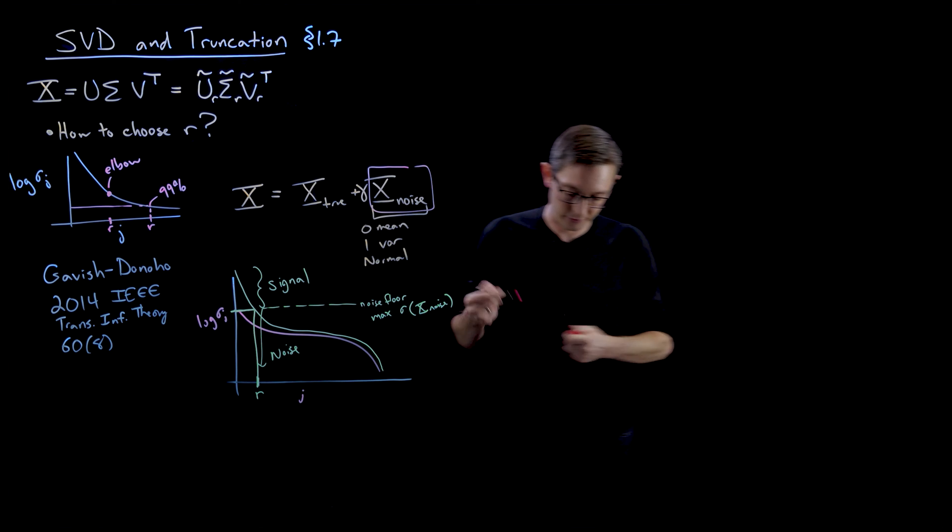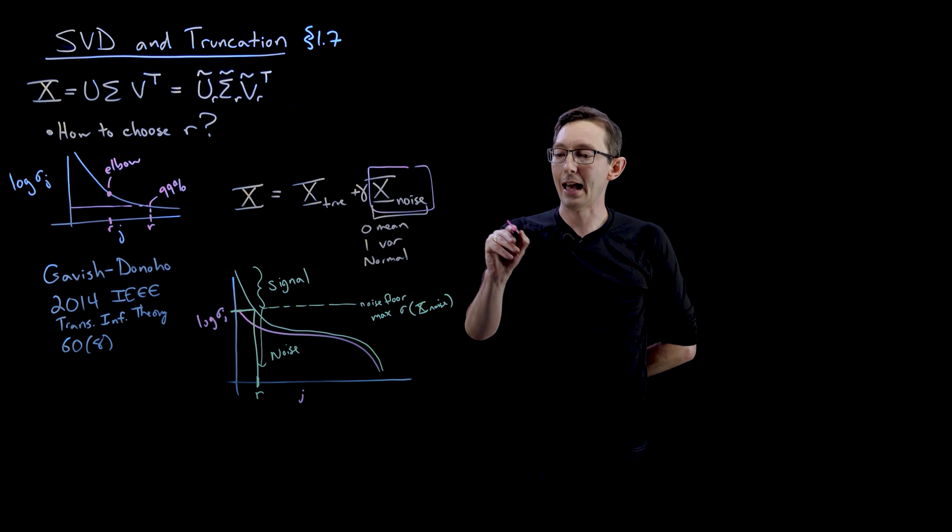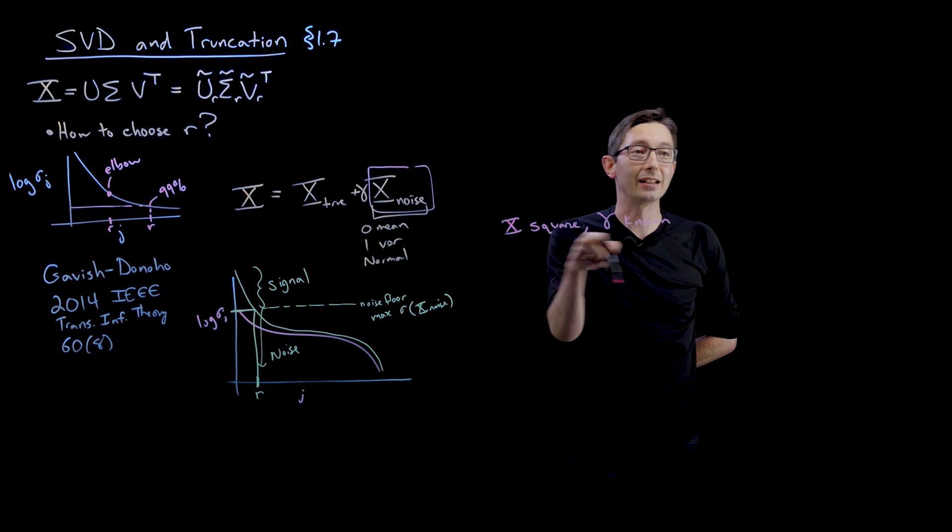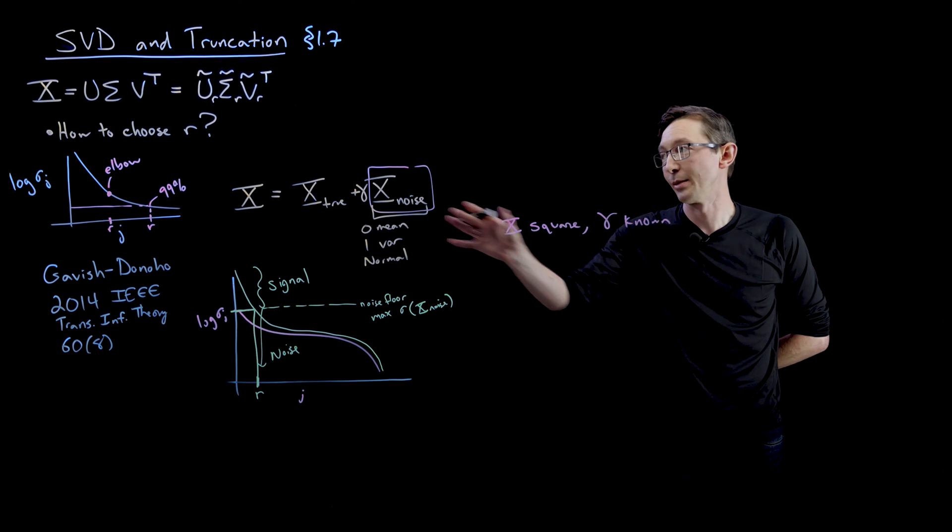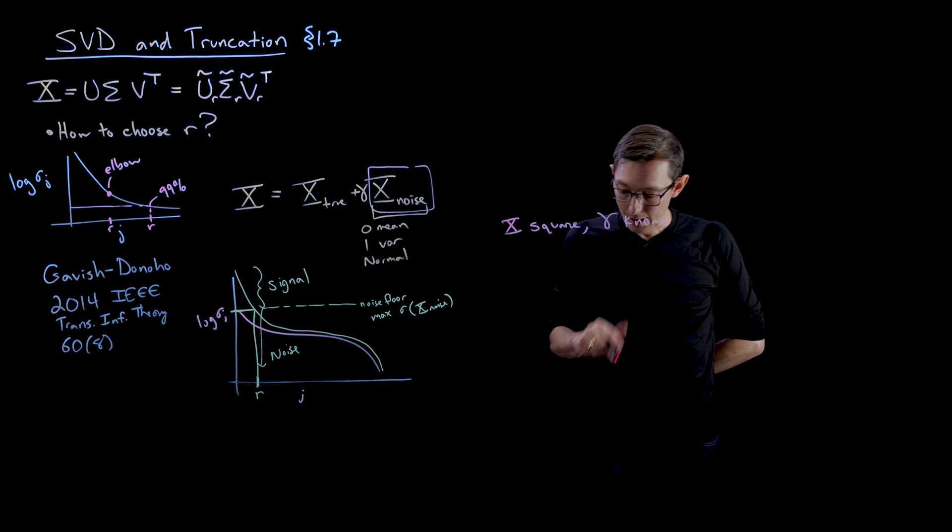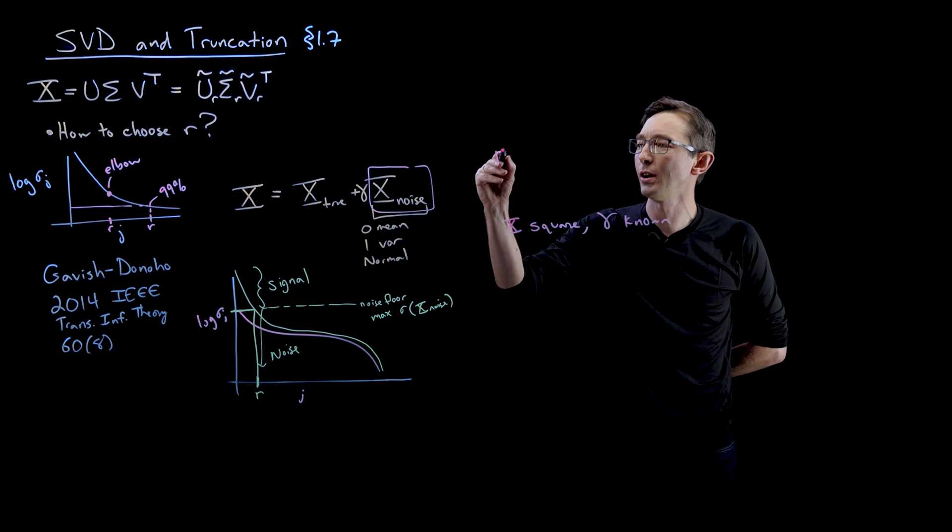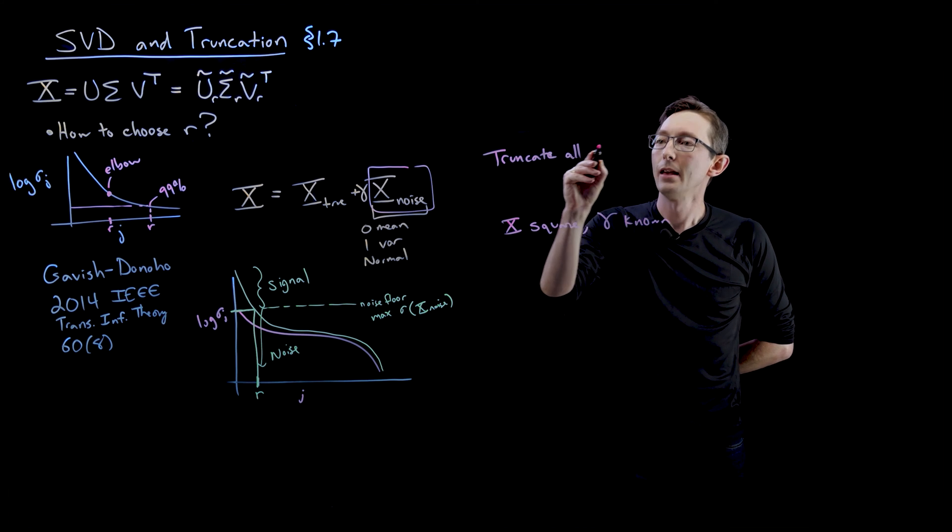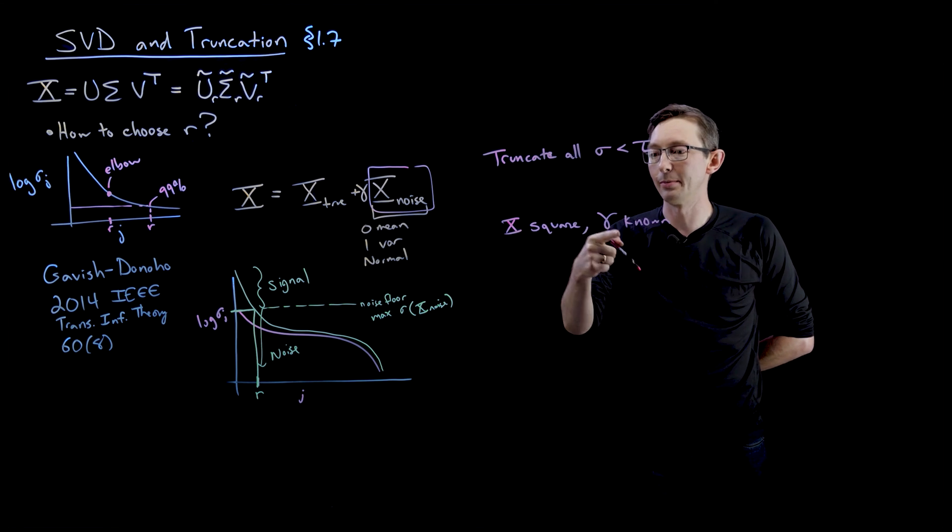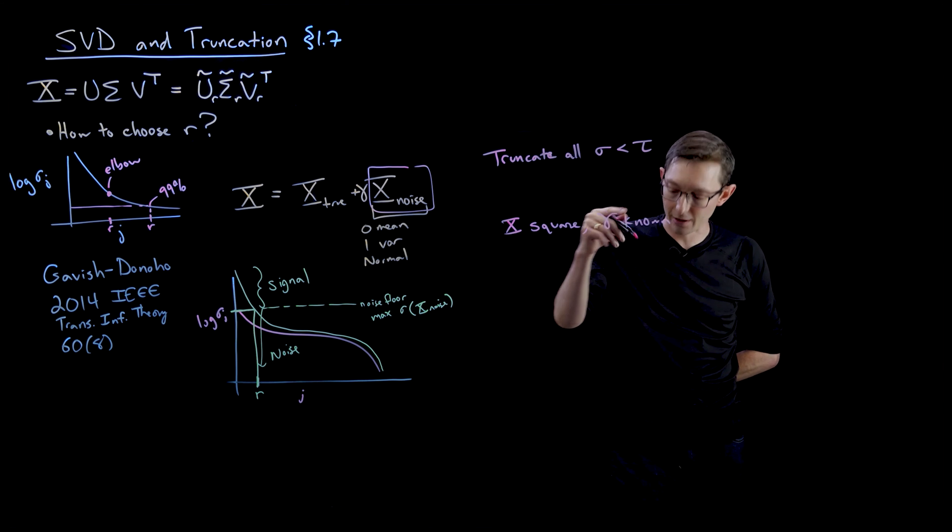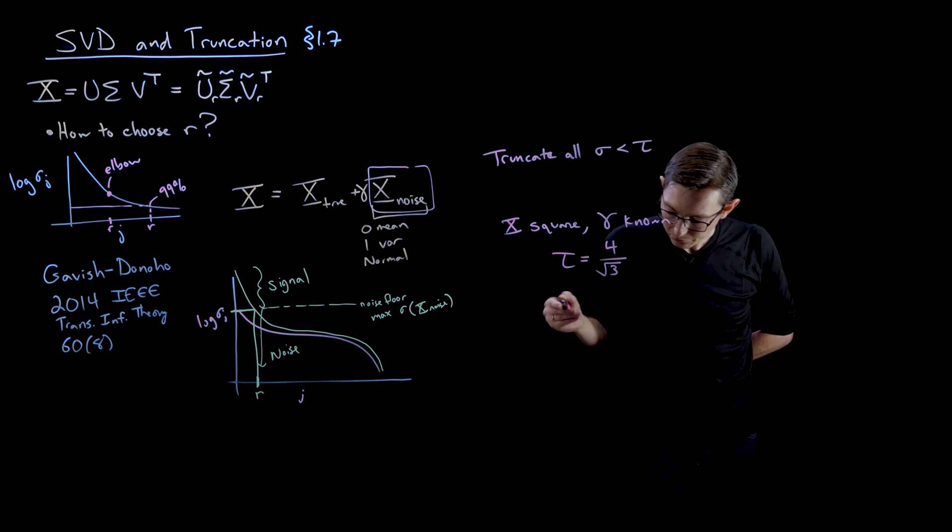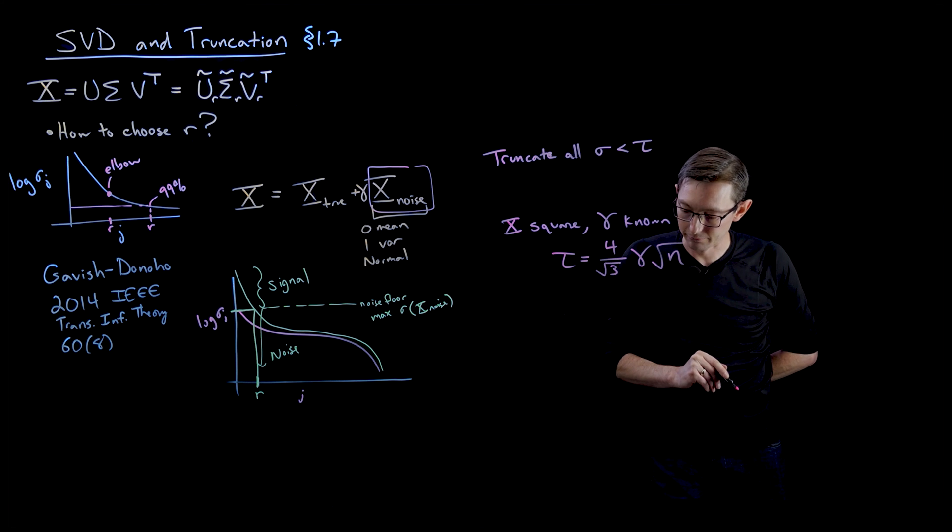And what they do is they actually show some different cases where you can use this. So let's say, for example, I have case one is pretty simple. Let's say X is square and gamma is known. This is the least likely case in reality. You don't usually have a square matrix X and you don't usually know how much noise you have. But let's say for now you have a square X and you know gamma. What we're going to do is we're going to truncate all sigma lower than some threshold value tau. And this tau is going to be determined by these values here. So if X is square and gamma is known, then tau is equal to 4 over the square root of 3 times gamma times root N.